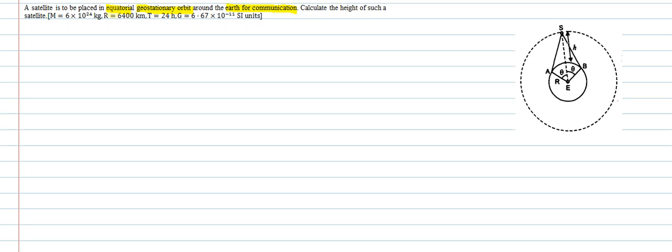Calculate the height of such a satellite. The data given above: M is equal to this, R is equal to, T is equal to this, and G is equal to this value. The given data, we have been given mass of earth.